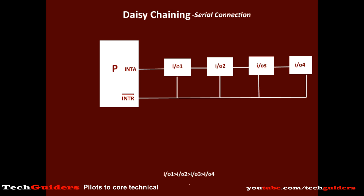Let I/O device 1 be of higher priority than I/O device 2, which is of higher priority than device 3, which is of higher priority than device 4. Hence the acknowledgement line first passes through device 1, the highest priority device, then the second highest, then the third and fourth.